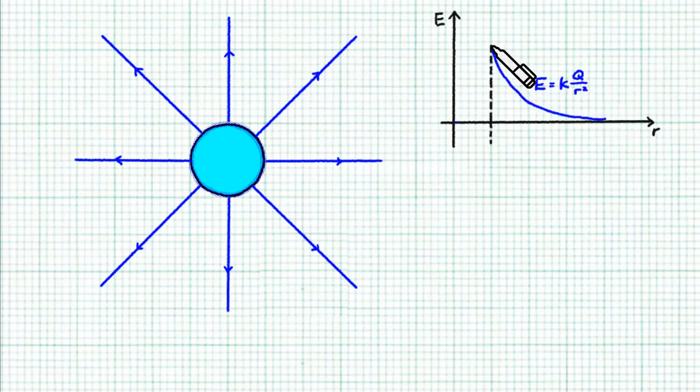The maximum field strength actually occurs here at the surface of the sphere. So big R is the radius of the sphere, and the maximum field strength has the value KQ over R squared. What about the inside of the sphere? Now remember, inside the sphere, the field strength is zero. So we are going to draw a horizontal line at zero here.